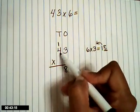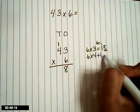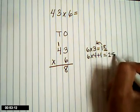Next problem. 6 times 4. Add that regroup number. 6 times 4 plus 1. 6 times 4 is 24, plus 1 gives us 25.